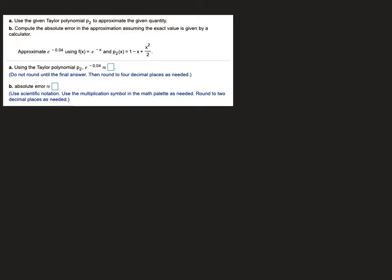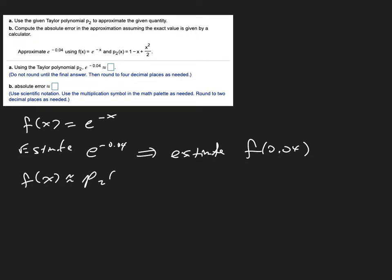This one has a similar issue with how it's set up. Again, f of x here is e to the minus x. And so if we're trying to estimate e to the minus 0.04 means we're trying to estimate f of 0.04. So make sure you believe that f of 0.04 is e to the minus 0.04, and that's what I'm trying to estimate.